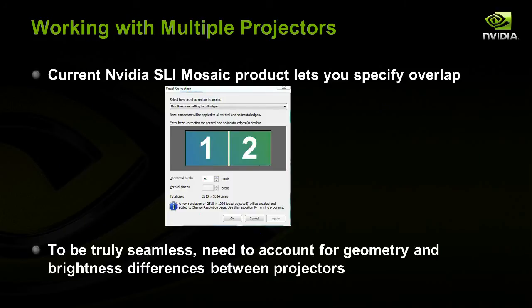Up until now, NVIDIA's SLI Mosaic product allowed specifying bezel correction or an overlap region for projectors, but there was no way to account for geometry correction or brightness differences between displays. That's what's new and what we're offering now.